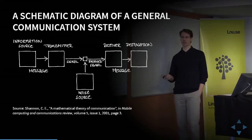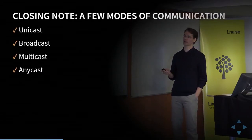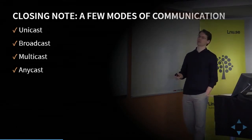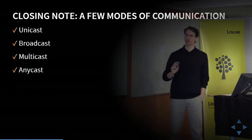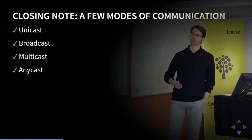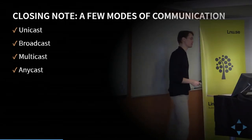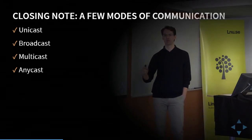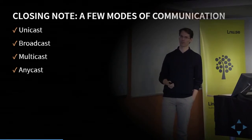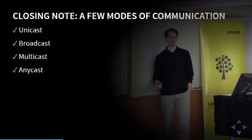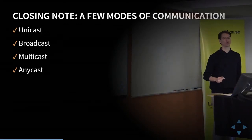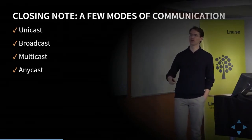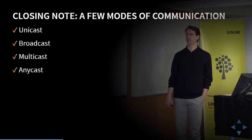Before we leave the 'who is who' section, we look at modes of communication. When computers communicate in TCP/IP, they use different message types. We have the unicast message — a message sent from one source to one and only one destination. Then we have the broadcast message, sent from one source to every possible destination — in IP communication, that means every destination within the same local network.